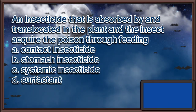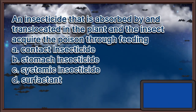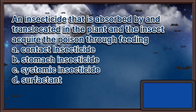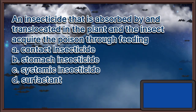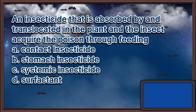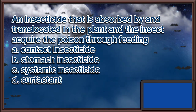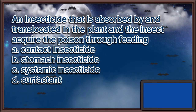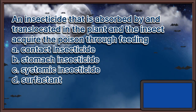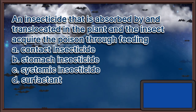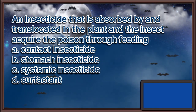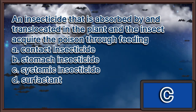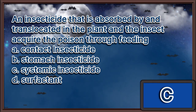An insecticide that is absorbed by and translocated in the plant, and the insect acquires the poison through feeding. A. Contact insecticide. B. Stomach insecticide. C. Systemic insecticide. D. Surfactant. The answer is letter C.